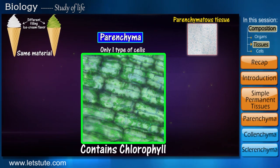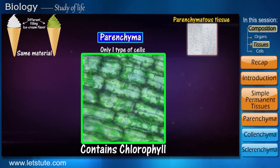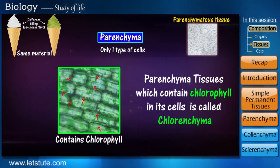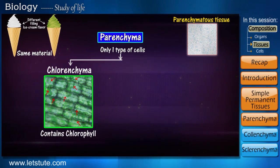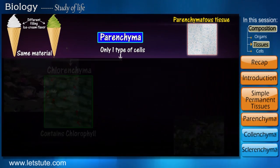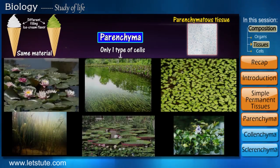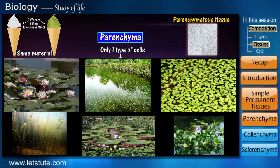This pigment, called chlorophyll, is present in the cells of the parenchyma. Such parenchyma tissue which contains chlorophyll in its cells is called chlorenchyma.